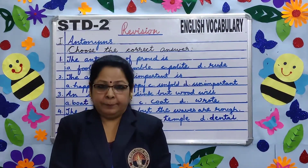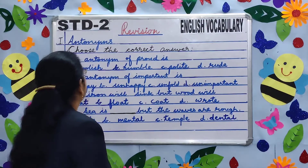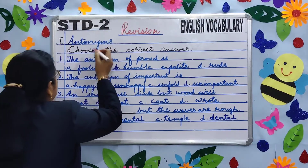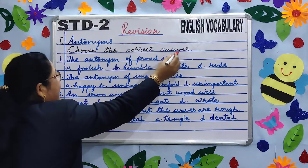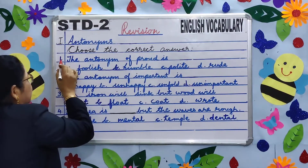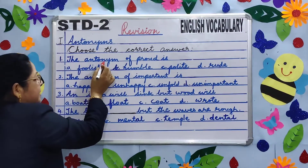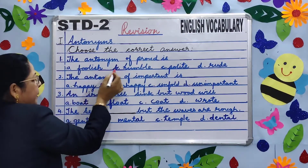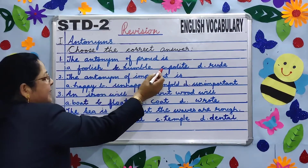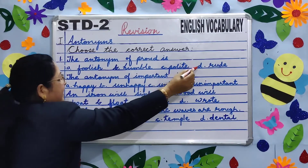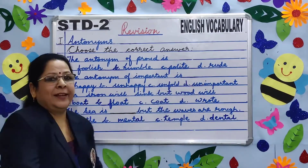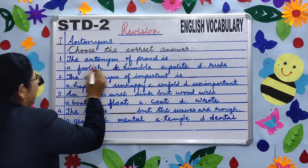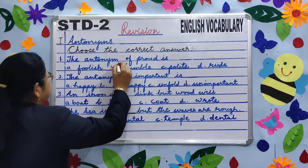Now children, look at the board. Number one — antonyms, choose the correct answer. The antonym of 'proud' is: A. Foolish, B. Humble, C. Polite, D. Rude. Can you answer? Yes — B. Humble.